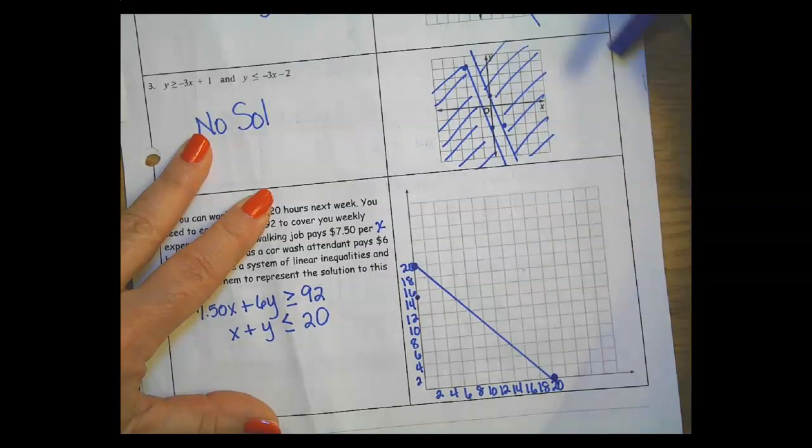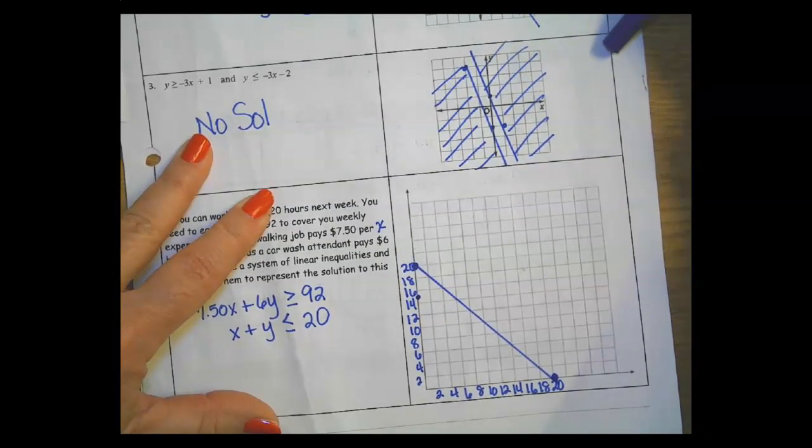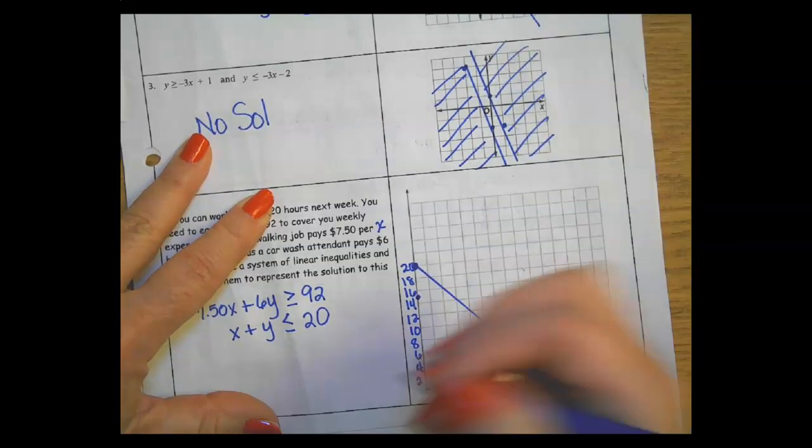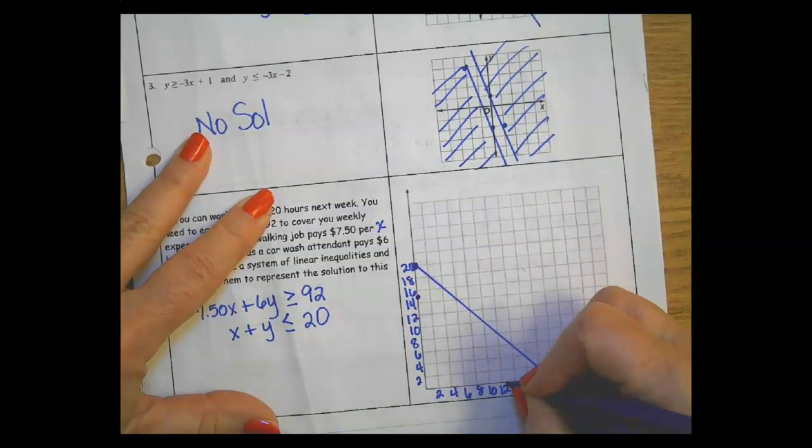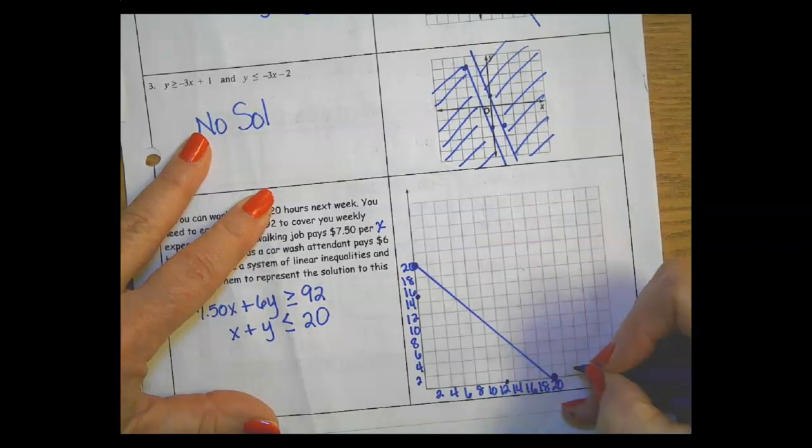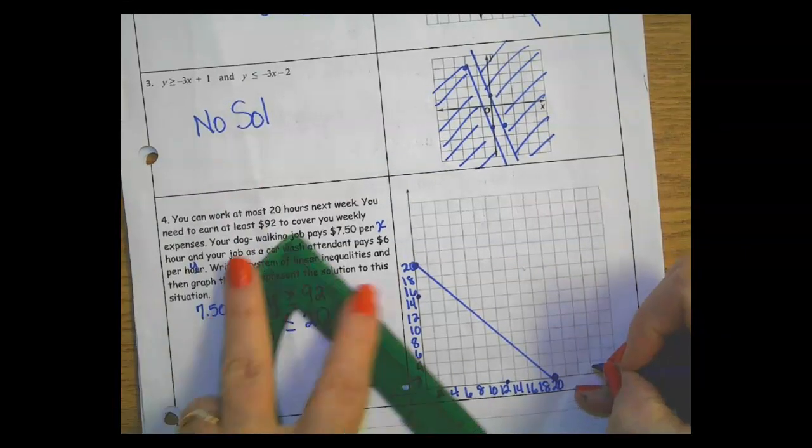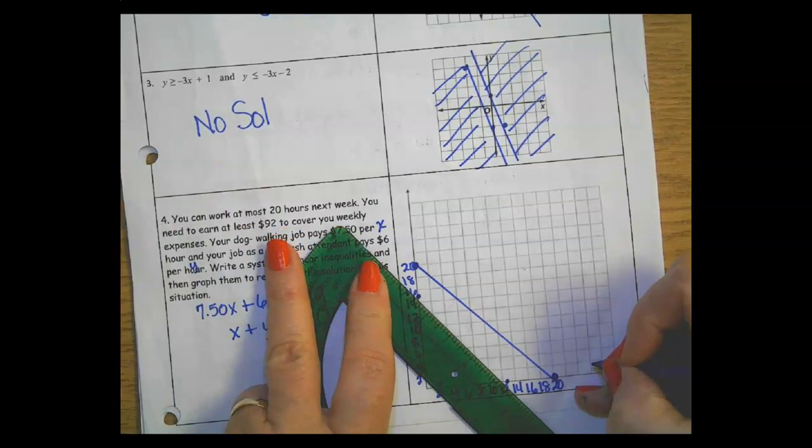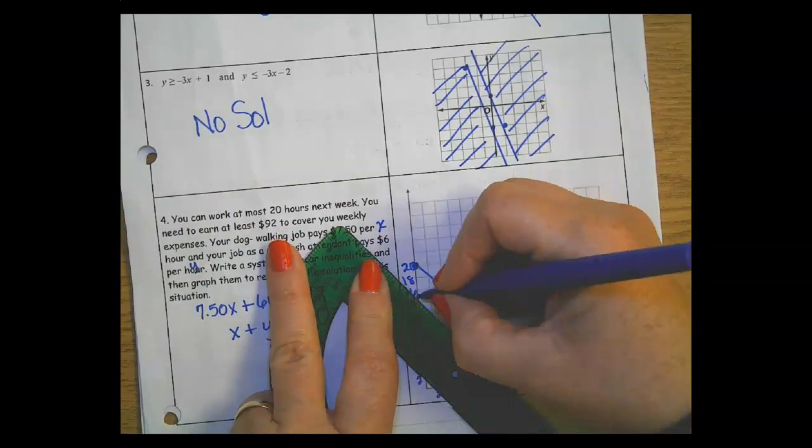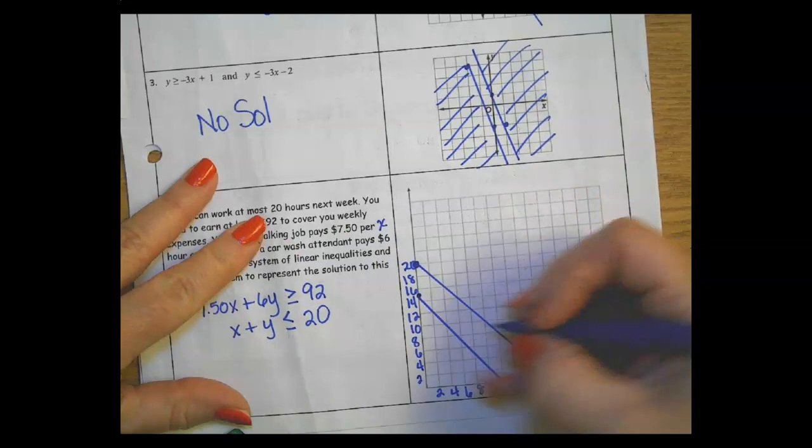The other one is a little bit trickier. I'm going to go straight to my y-intercept which is 0, 15.33. So 15 would be between 14 and 16, so I'm going to put somewhere here.